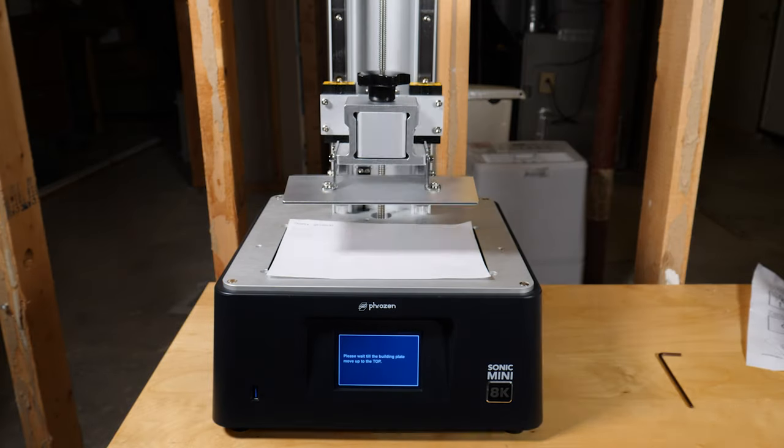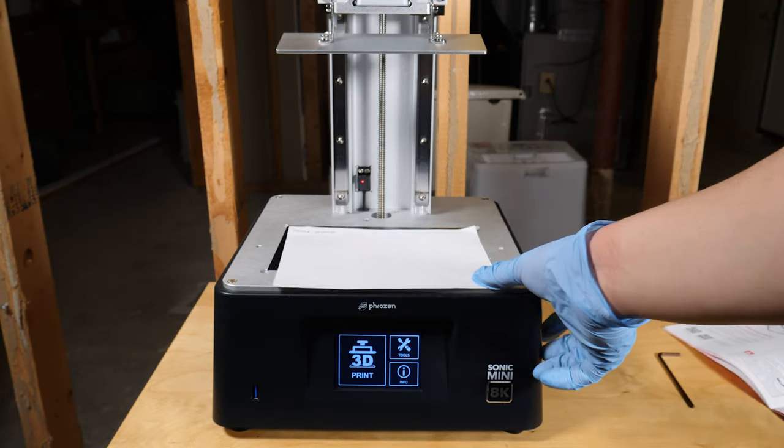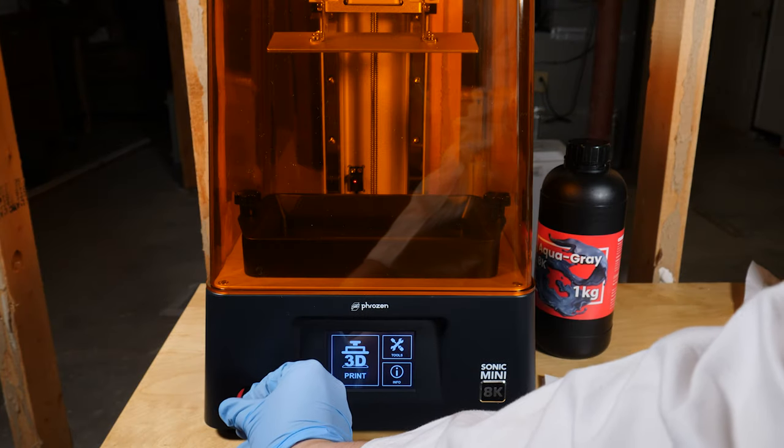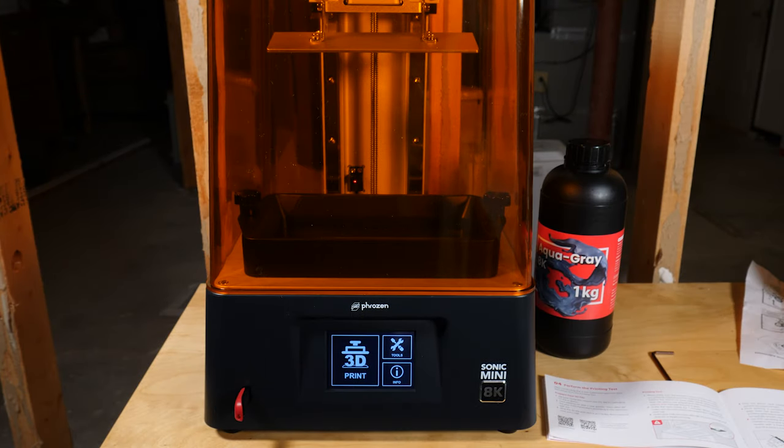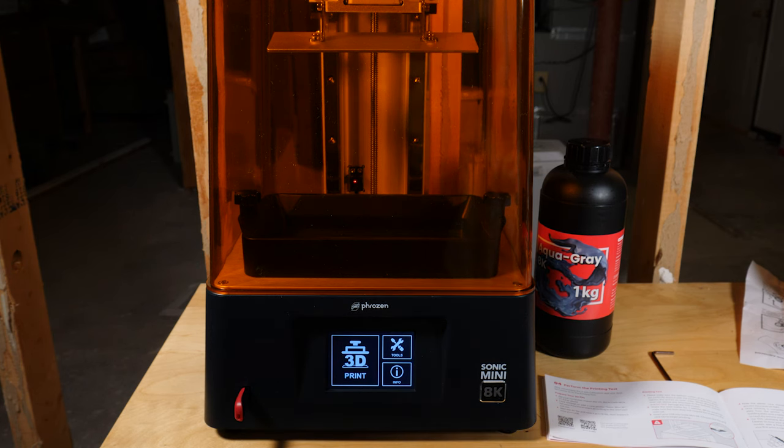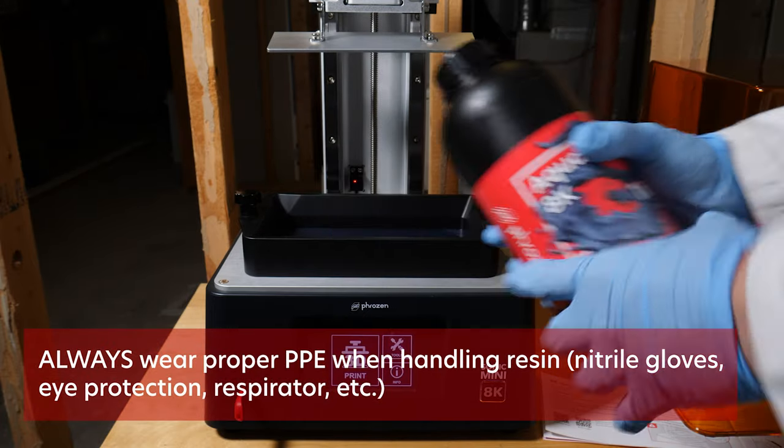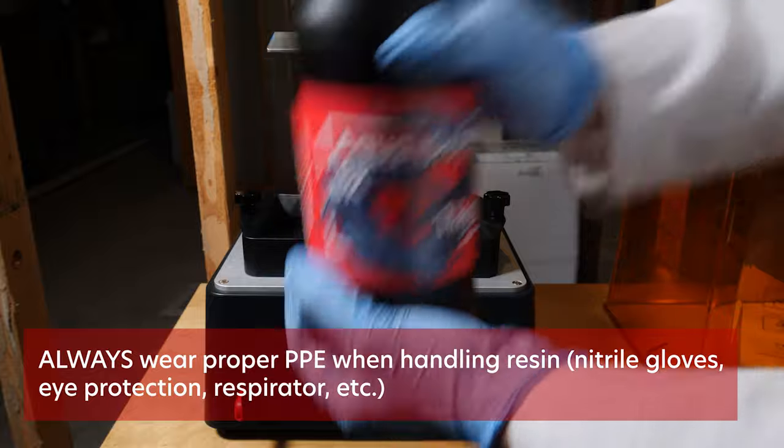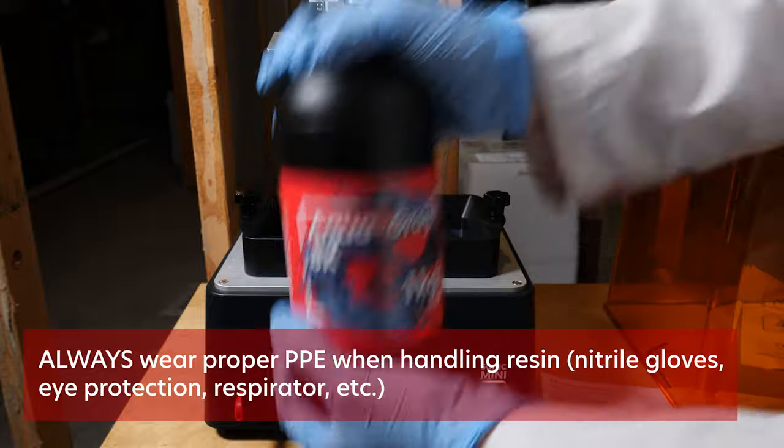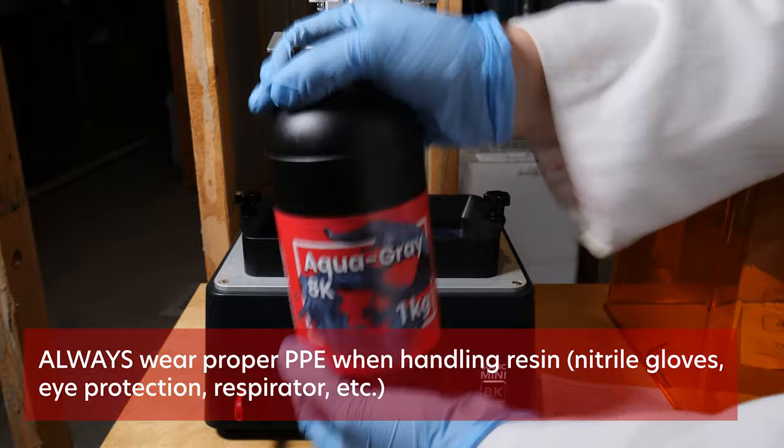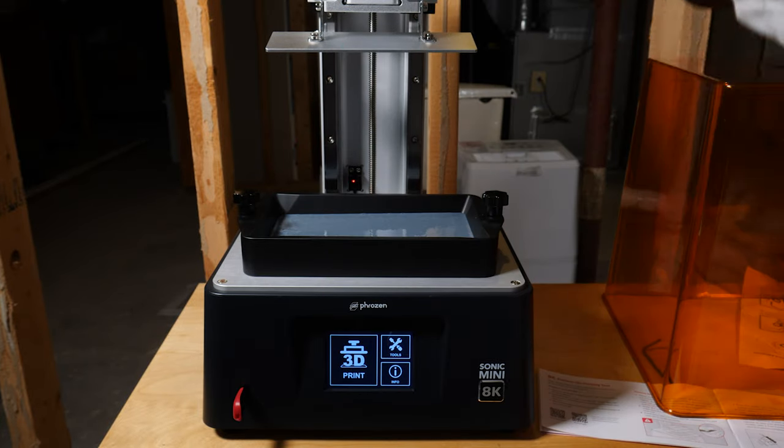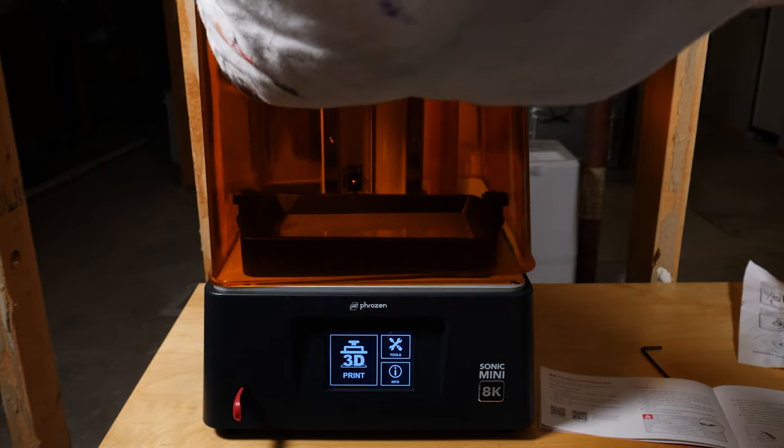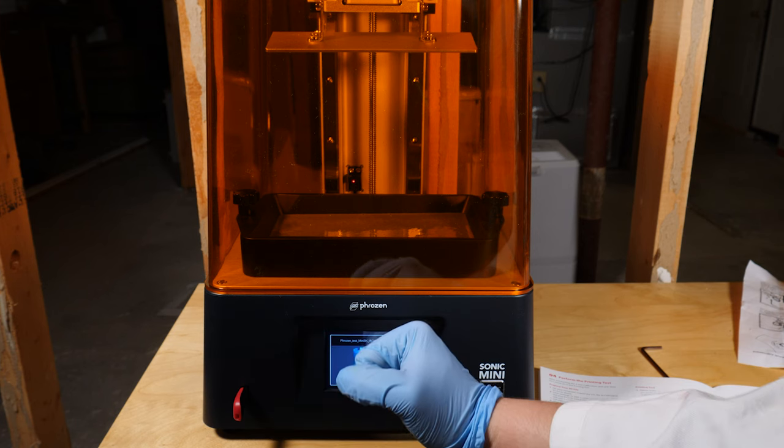Once that looks good I can hit done and the build plate will raise back to the top. Great, now that I think all of the initial testing and setup is done, I can plug in the USB which already has the test print file included, and then I can pour my resin into the vat. Make sure to give it a thorough shake first, and I mean super thorough—you want to make sure everything is fully incorporated. Finally I'll put the UV cover back on and then we'll begin our first test print.